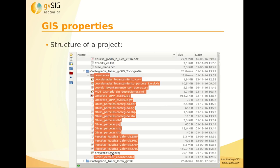If we send only the project file to another person, they won't be able to open it because the layers are also necessary. So if we send the entire folder containing the project and all its layers, the other person will be able to open the project correctly with all the cartography in the views.